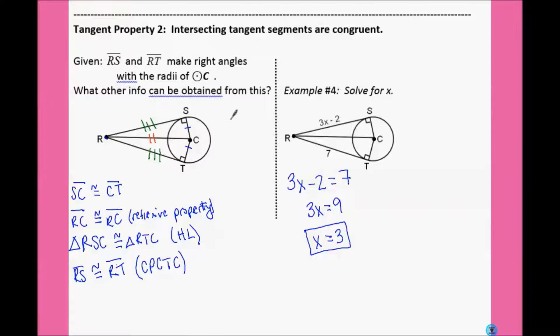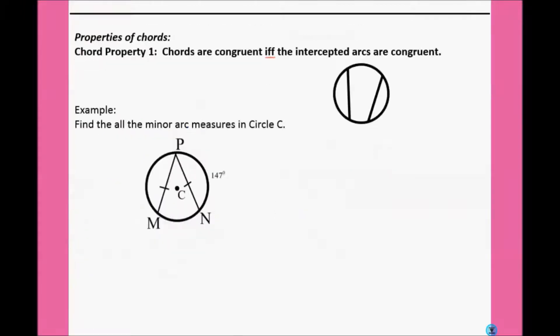Next, we're going to look at some rules about chords. Chords are congruent if and only if the intercepted arcs are congruent. So, if this arc here and this arc here are congruent, then the chords are also congruent. And vice versa, if we know the chords are congruent, then we know the arcs are congruent.